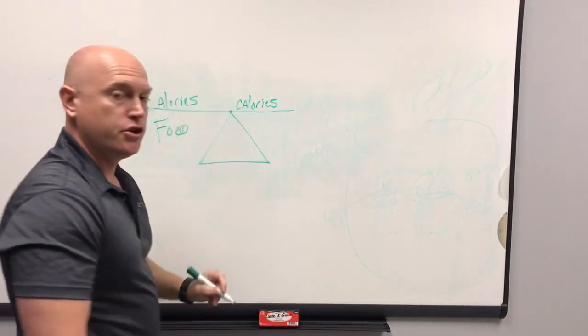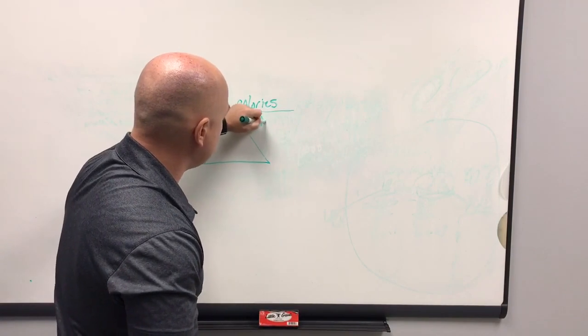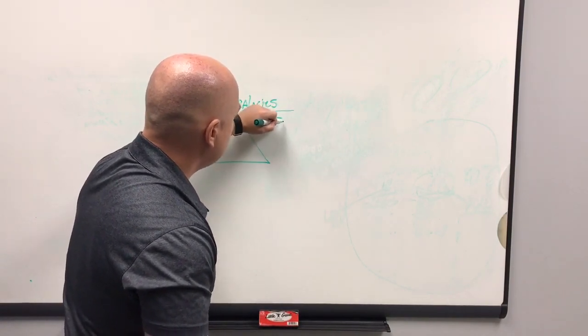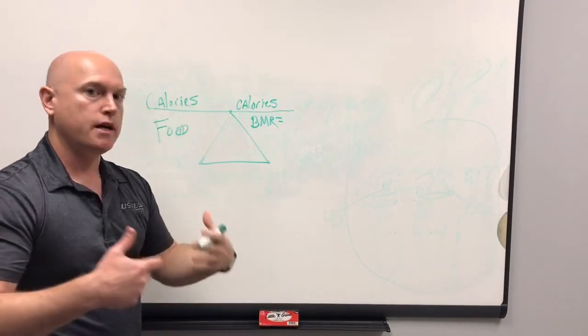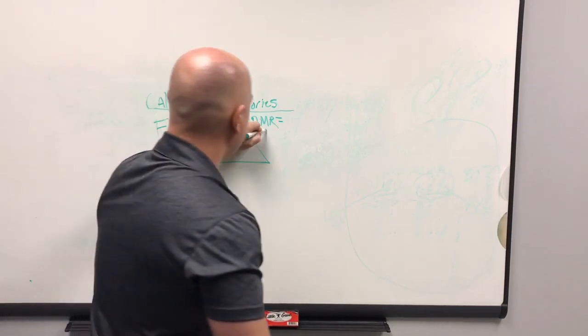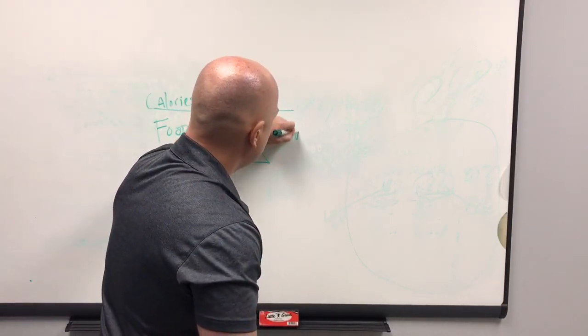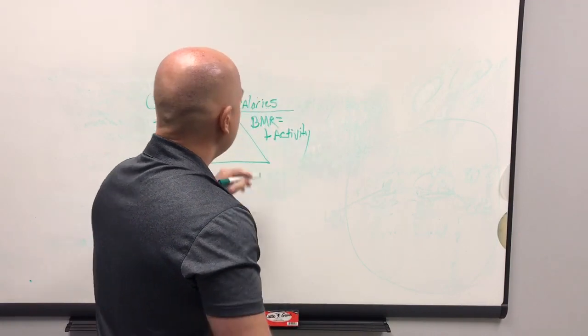That will come through three things. One is called your basal metabolic rate, and that's equal to how many calories your body will burn at rest, plus your activity level.